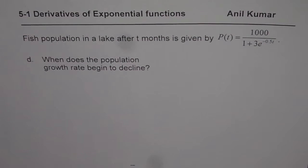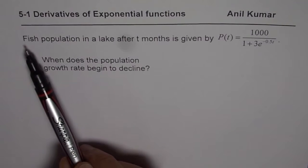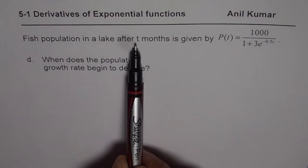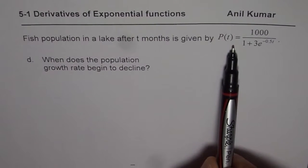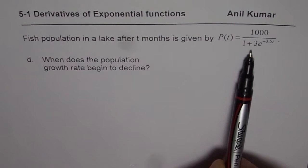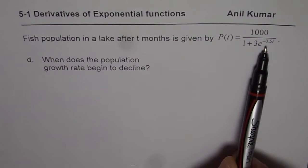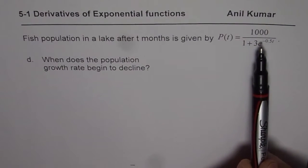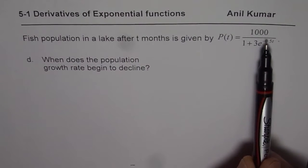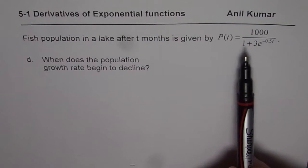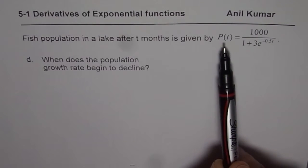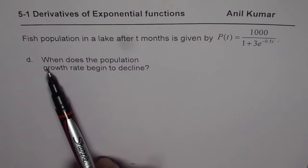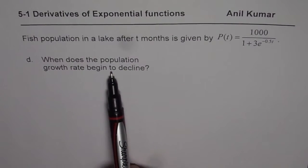I am Anil Kumar. We are exploring derivatives of exponential functions. Let us continue with the question we started with. The question was: fish population in a lake after t months is given by p of t equals 1000 divided by 1 plus 3 e to the power of minus 0.5 t. Parts A, B, C and D were to find the initial population, 75% of the maximum population, and the rate of change in population after 2 months. Now here we will discuss Part D, which is: when does the population growth rate begin to decline?